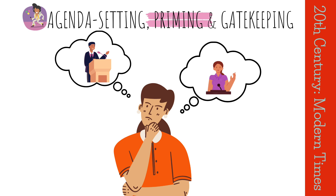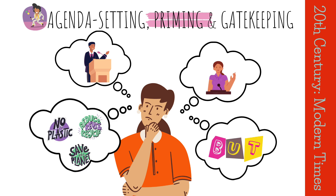For example, if the media are constantly talking about a candidate's stance on the environment, then people would be more likely to consider that stance when evaluating the candidate.